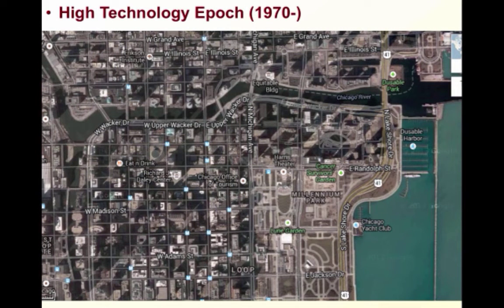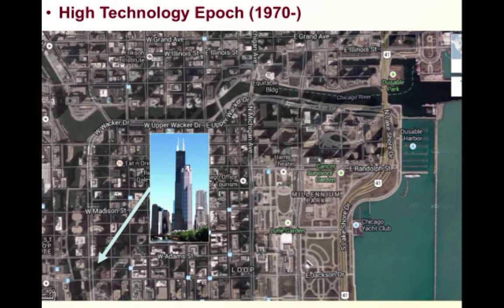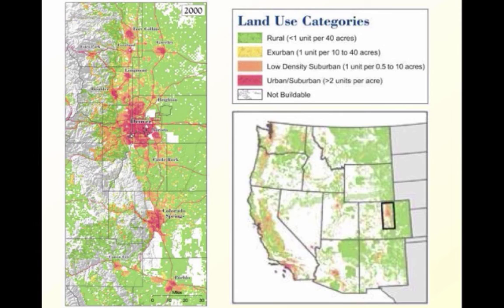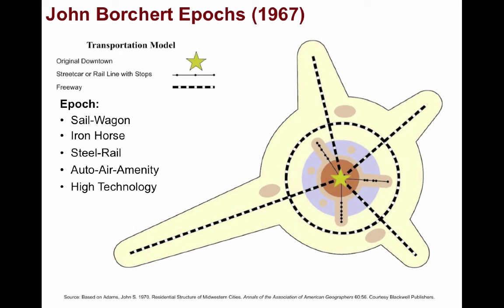The High Technology Epoch is highlighted by modern buildings such as the Sears Tower, constructed in 1973. Looking at Colorado, for example, we can examine Denver and Colorado Springs. This map shows relative urban density going from red urban-suburban areas, to low-density suburban areas, the exurbs, and then to low-density rural areas — showing growth from 1960 to 2000, with projections into 2040. Some geographers have proposed an extension of Borchert's model with new epochs taking into account late 20th century developments and patterns of urban decline up until the 1990s, when there was a resurgence of metropolitan growth.